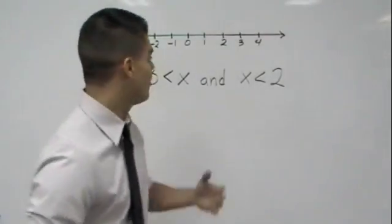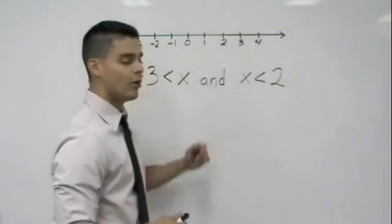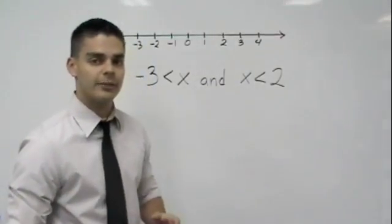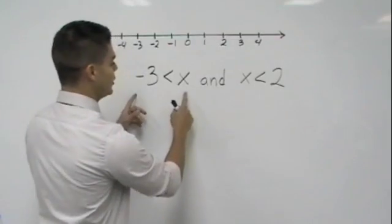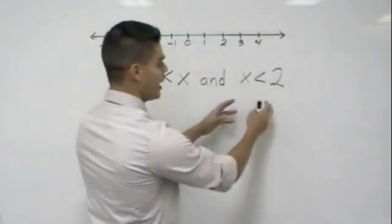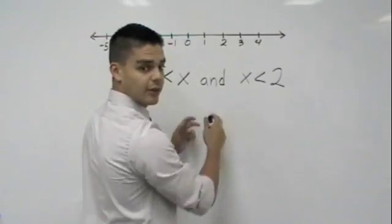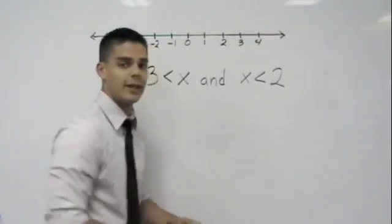A compound sentence, the same as a compound inequality in this case, or we also can call it a conjunction. Why? Because we have here two inequalities connected by a conjunction. The conjunction in this case is the word and.